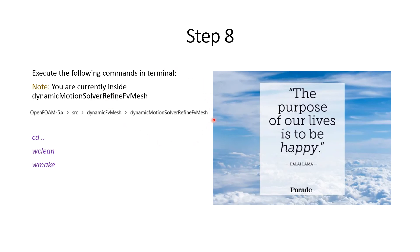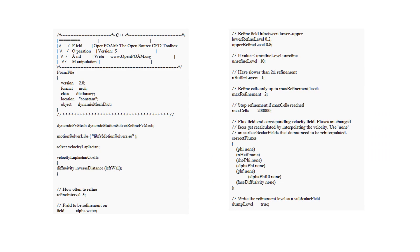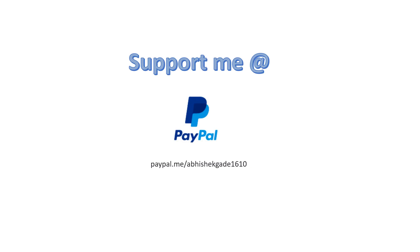Finally, if all the steps were done correctly, the new dynamicMotionSolverRefineFvMesh library will be created. A sample dynamicMeshDict file is shown here. An important note: you can only list solvers that are present in dynamicMotionSolver — not those from any other dynamicFvMesh. This is a common mistake. For solid body motion, only solvers supported by dynamicMotionSolverFvMesh can be added. The refining settings such as refineInterval appear below the solver entry, for example velocityLaplacian. Thank you, and you can support me on PayPal if you like these videos.